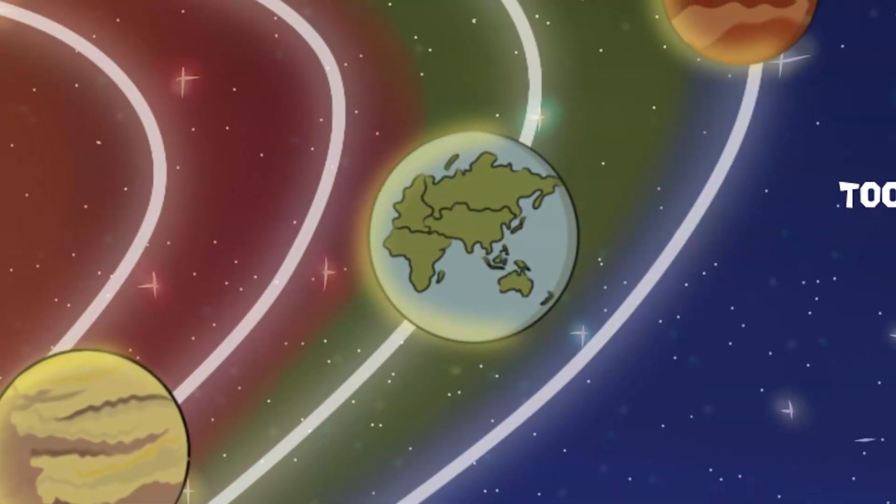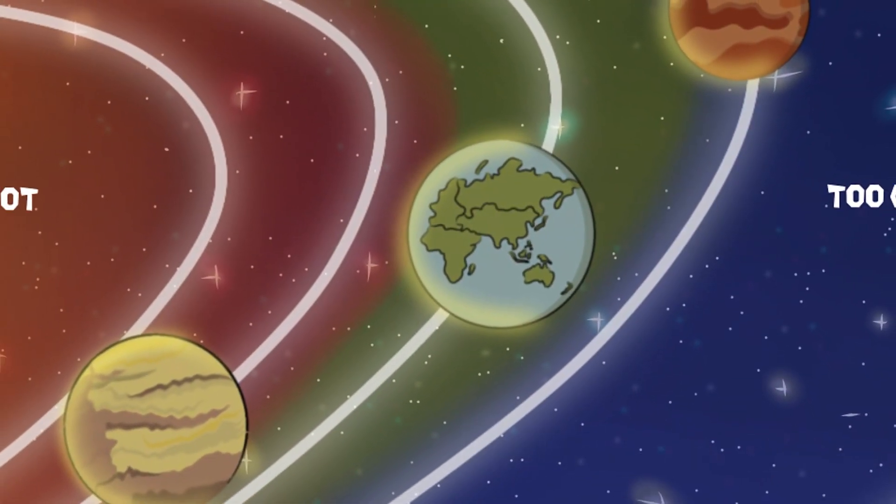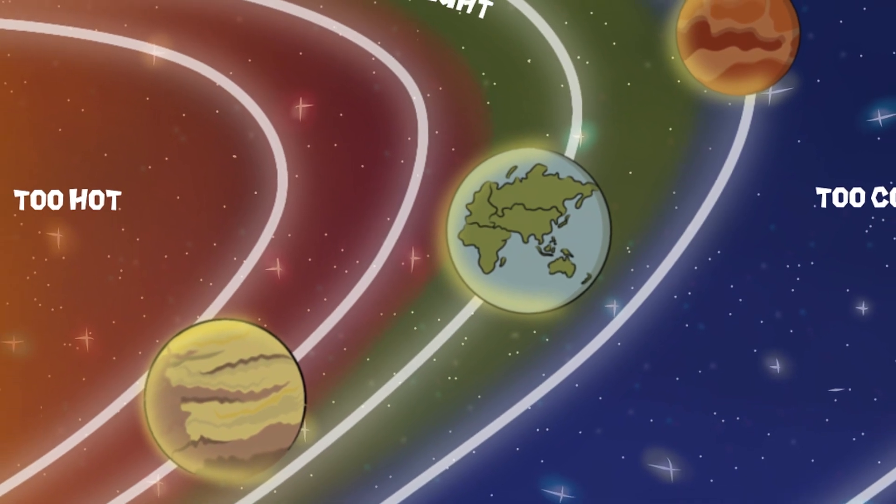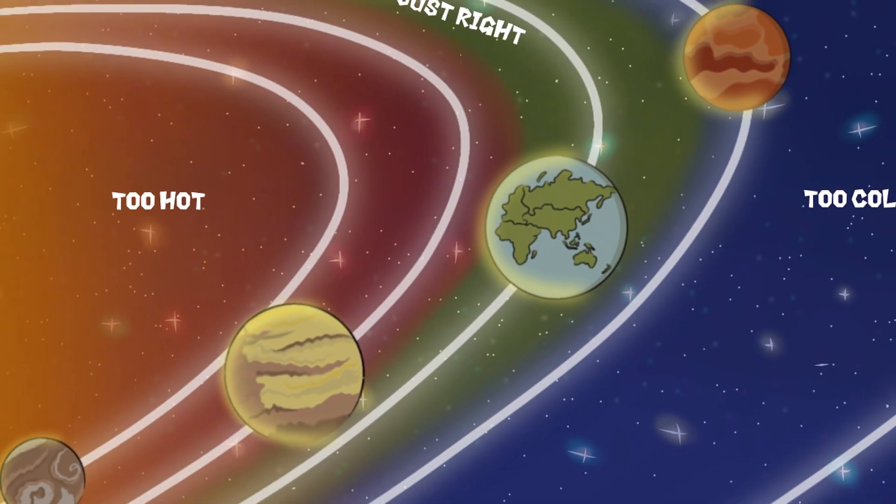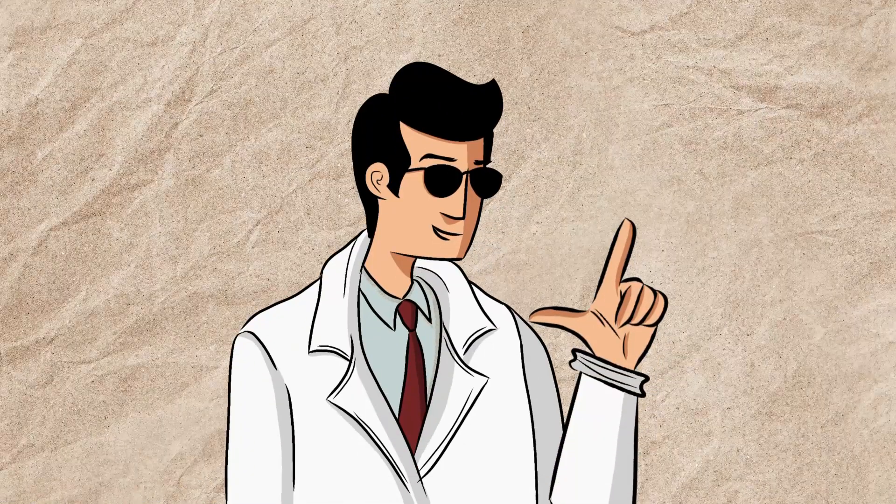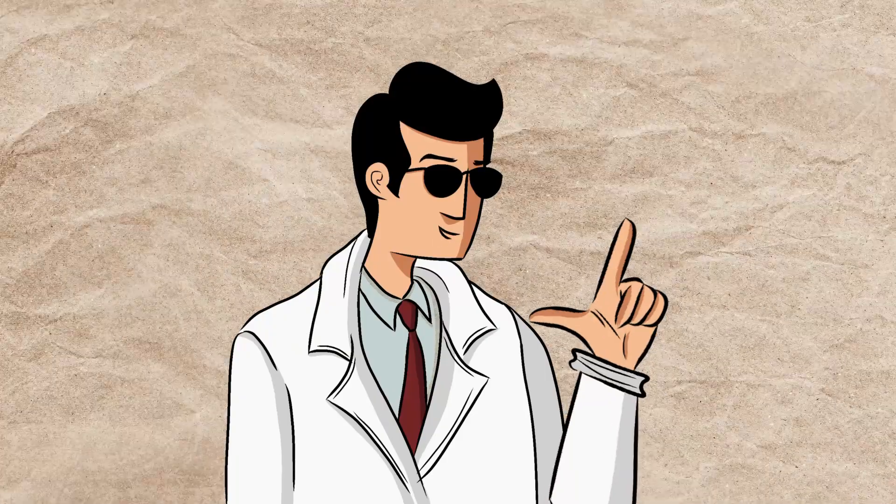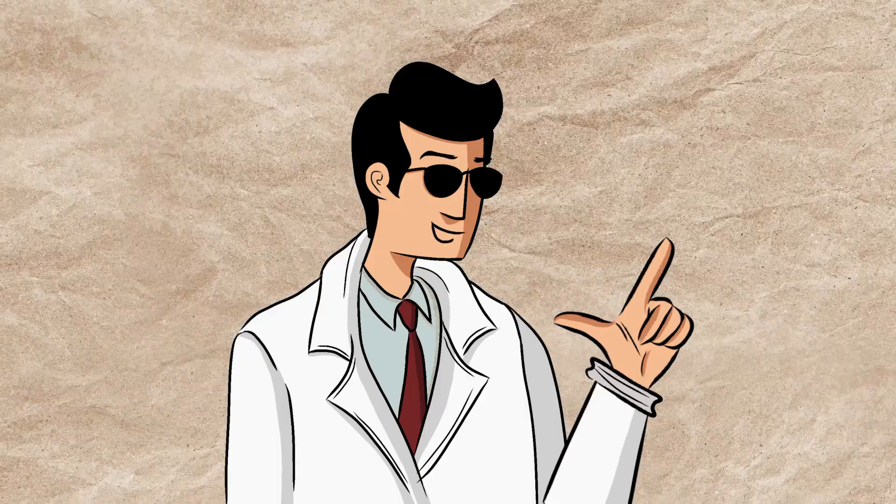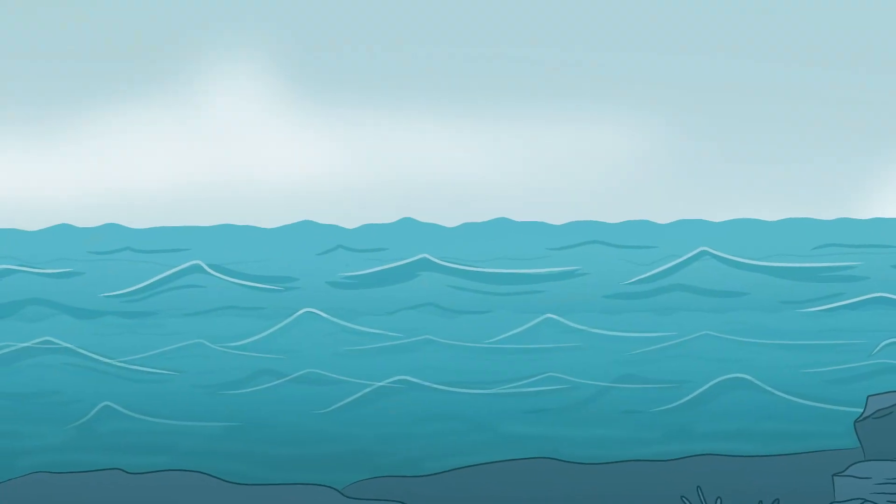Earth's position in the Goldilocks zone, a region around a star where conditions are just right for liquid water to exist, ensured the ideal temperature for water to remain in its liquid state. Unlike on colder planets where water would freeze, or hotter planets where it would vaporize, Earth's oceans became a cradle for life.